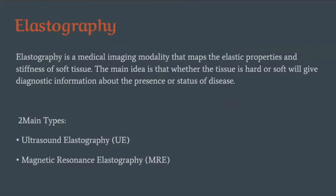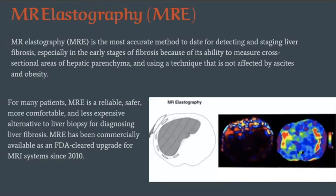Elastography is a medical imaging modality that maps elastic properties and stiffness of soft tissues. When we look at hard tissue or soft tissue, here we can see elasticity. Two main types: ultrasound-based elastography and MRI-based elastography.